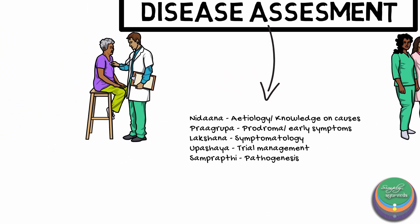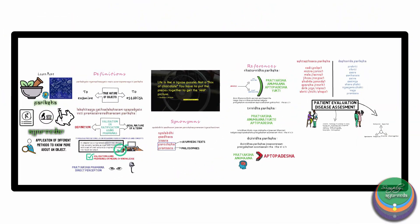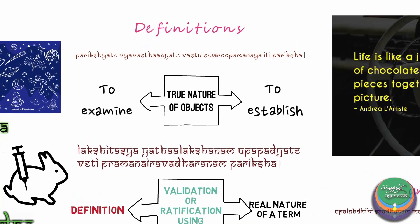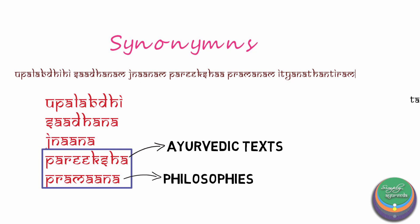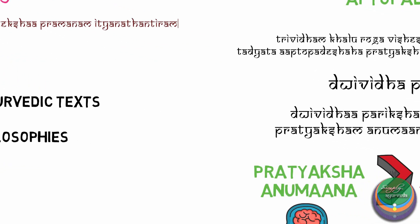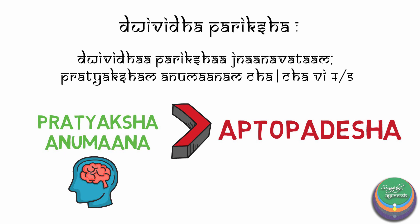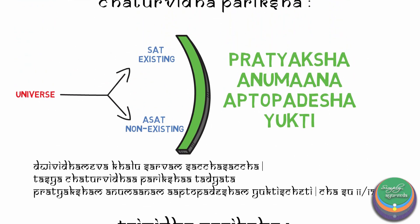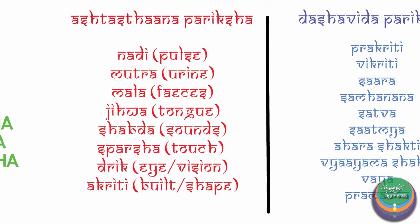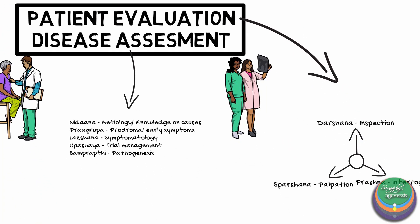Hope you got a better grip on the concept of Pariksha. Let us summarize what we learnt in this video. We looked into the various definitions of Pariksha, its synonyms, and understood that Pariksha and Pramana are the same. Finally, we tried to understand the need and use of Pariksha in Ayurveda by understanding Chaturvidha Pariksha, Trividha Pariksha, Ashtasthana Pariksha, and Dasavida Pariksha. We also looked into the significance of Pariksha from the viewpoint of the Vaidya.